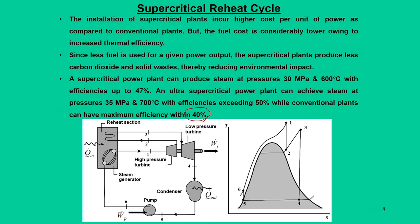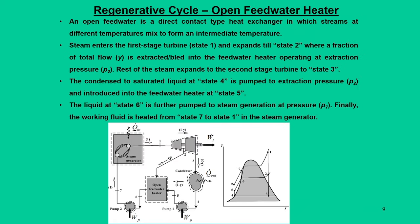A close thermodynamic analysis reveals that a supercritical power plant operating at 30 MPa and 600°C can achieve efficiency up to 47 percent. Ultra-supercritical power plants go even beyond, operating at about 35 MPa and 700°C, achieving efficiency up to 50 percent. Except for installation difficulties, supercritical power plants have more advantages compared to conventional plants operating in a reheat cycle.